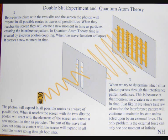When we try to determine which slit the photon passes through, the interference pattern collapses. This is because at that moment we create a new moment in time, the moment of now, in the eye of the observer.